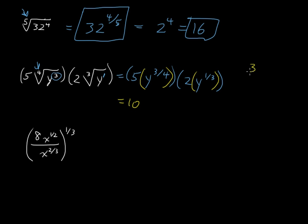You have 3 fourths plus 1 third. And after finding the lowest common denominator and such, you get 9 twelfths plus 4 twelfths, or that is 13 twelfths. So 10 times y to the 13 twelfths.